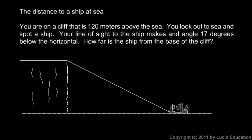And another example, finding the distance to a ship at sea. And in this problem, you are on a cliff that is 120 meters above the sea. So we're given a diagram here, but this information that we've just been told, you're on a cliff that is 120 meters above the sea, that would be this height right here. So let's go ahead and write that on the diagram, 120 meters. And you look out to sea and spot a ship. So there it is.